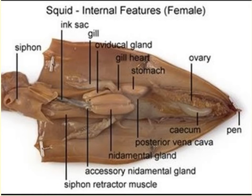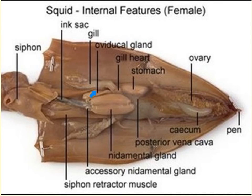Squids are dioecious, meaning we have both males and females. In the female squid, we can see the ovaries, which are the site of oogenesis and the development of eggs. The oviductal gland secretes a protective shell-like membrane around the eggs, and the nidamental gland coats the eggs with a gel that protects them and keeps them cohesive.